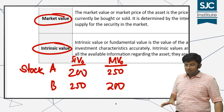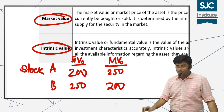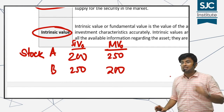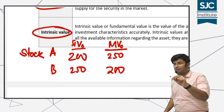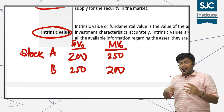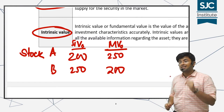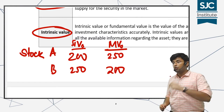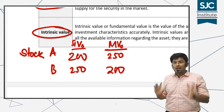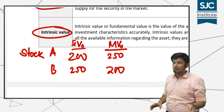Suppose in our example we have two stocks — Stock A and Stock B. Stock A has an intrinsic value of 200 in your mind and a market value of 250. Stock B has an intrinsic value of 250 and a market value of 200. Now, which stock will you buy and which stock will you sell?